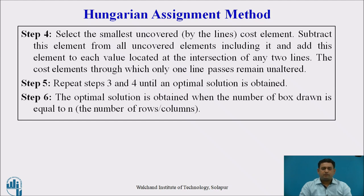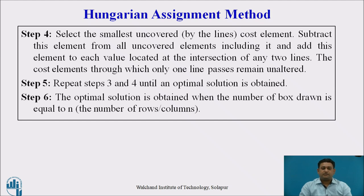In step four, select the smallest element that is uncovered by any horizontal or vertical line. Subtract this smallest uncovered element from all other uncovered elements, including itself. Then, add that value to the cells at the intersection of a horizontal and vertical line. Elements covered by only one line, with no intersection, are kept as they are.